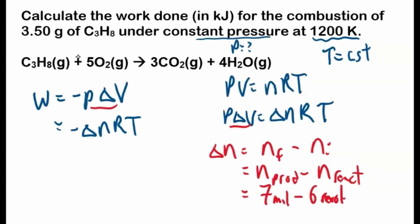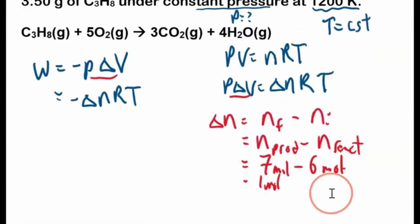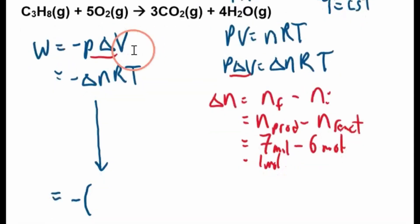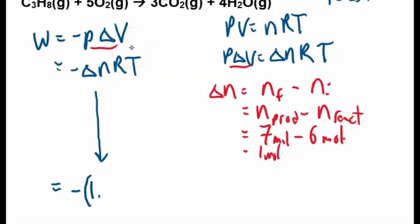Six moles. So that's just literally one mole there. So we're going to plug that into here. And I'm going to come down and write it here so it's nice and clean. So the change in moles for the reaction, for this reaction, using the balanced equation, is one mole.